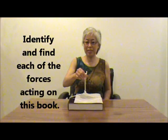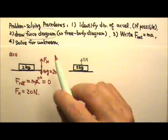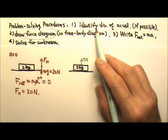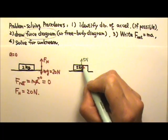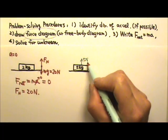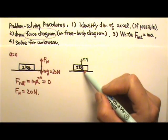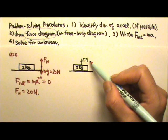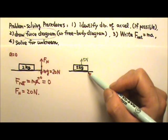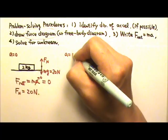What if I pull on a string upward with five newtons? Again, we want to identify and find each of the forces acting on this book. Let's follow the problem-solving procedures. Identify the direction of acceleration: you're pulling with five newtons, but the book weighs 20 newtons, so that's not enough to lift it. The book still stays at rest, so the acceleration is zero.